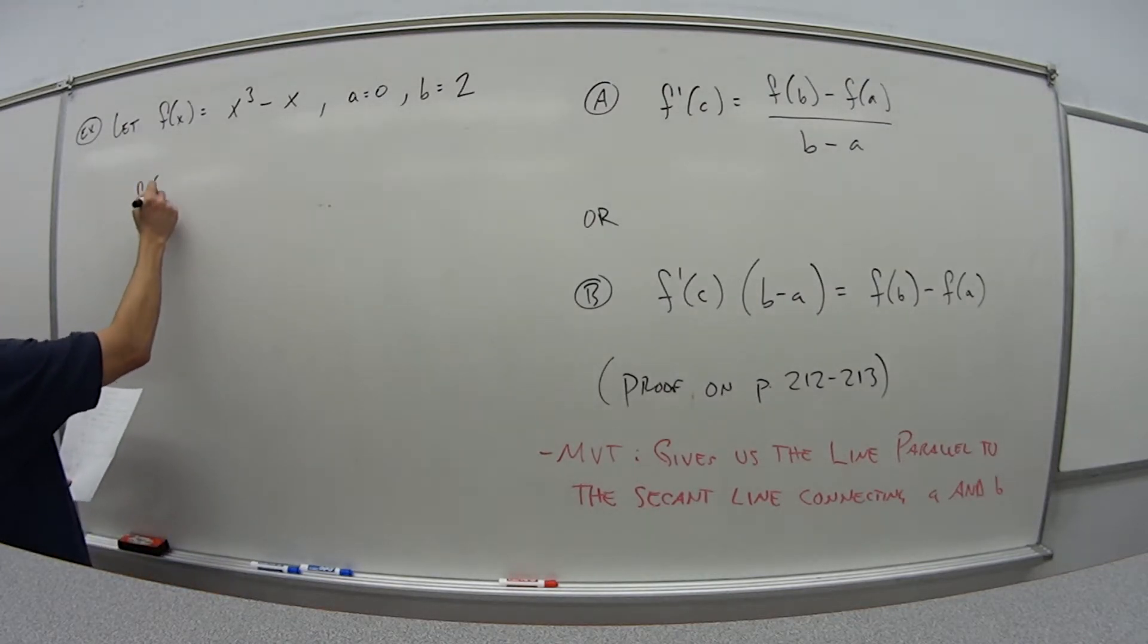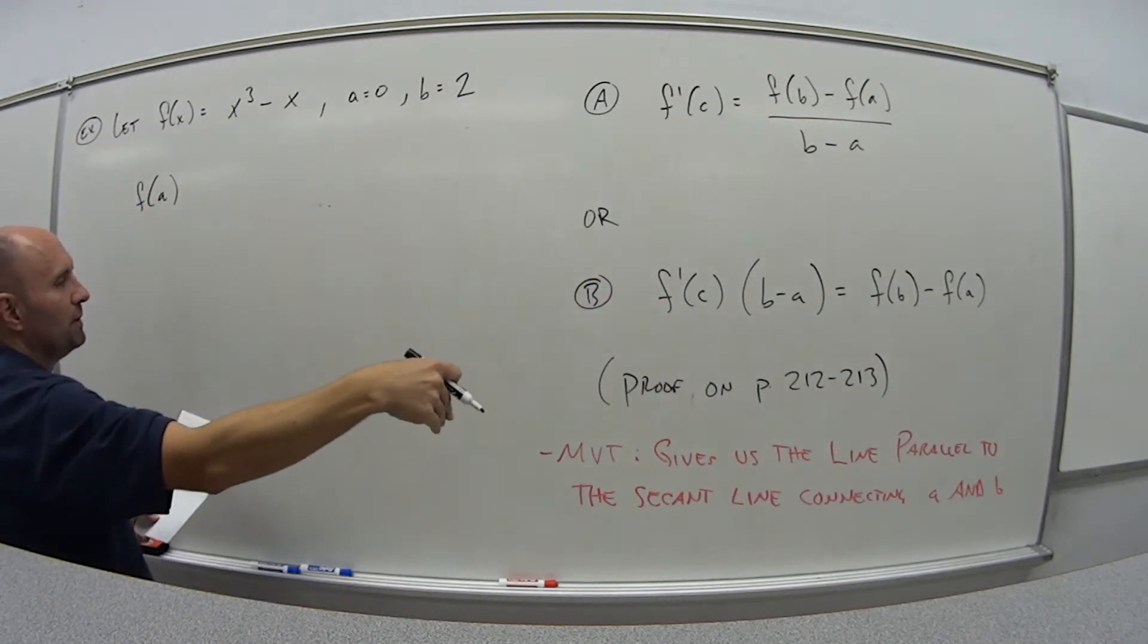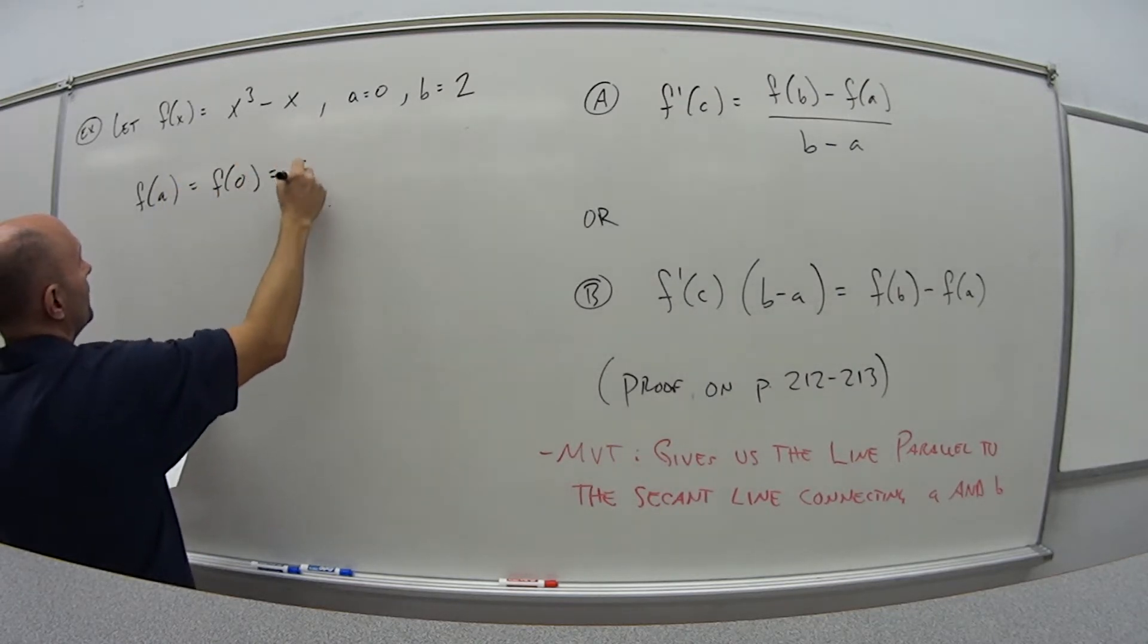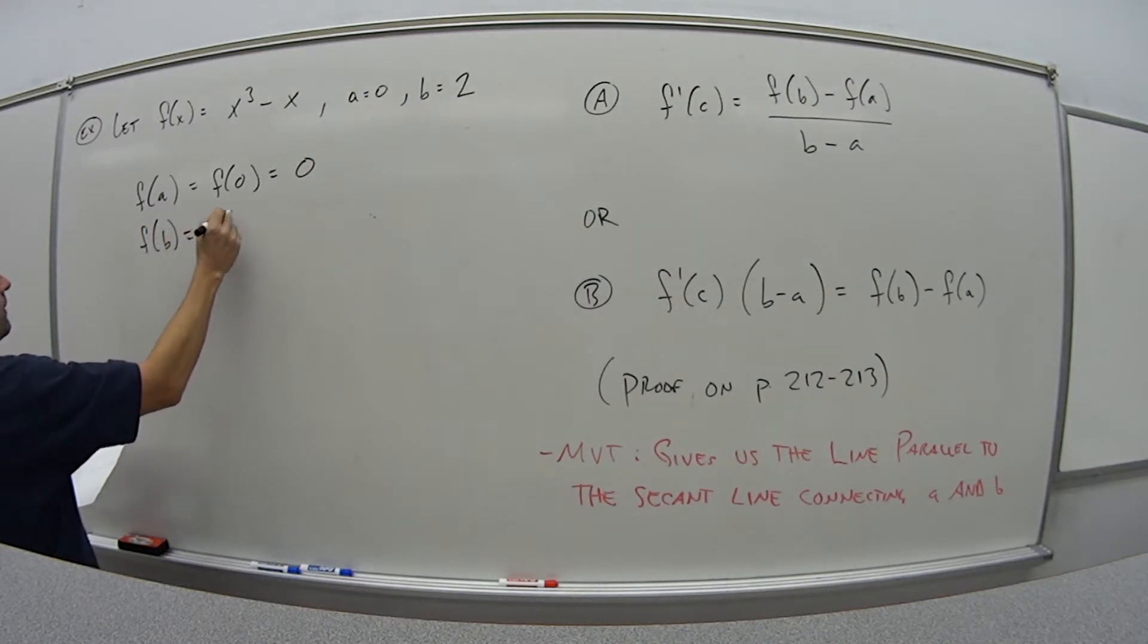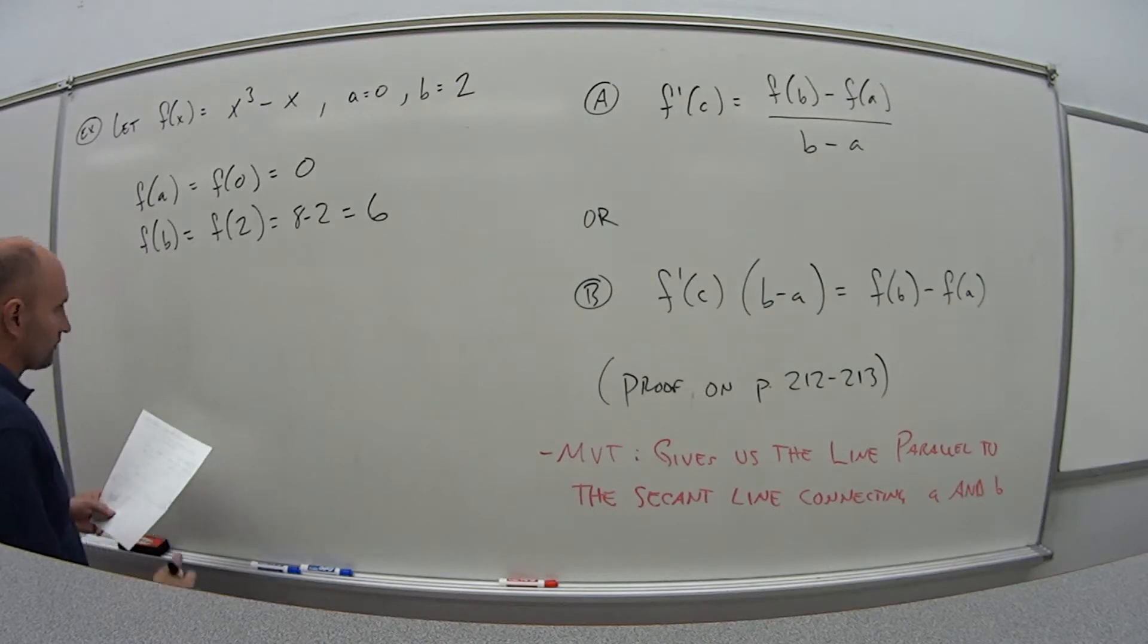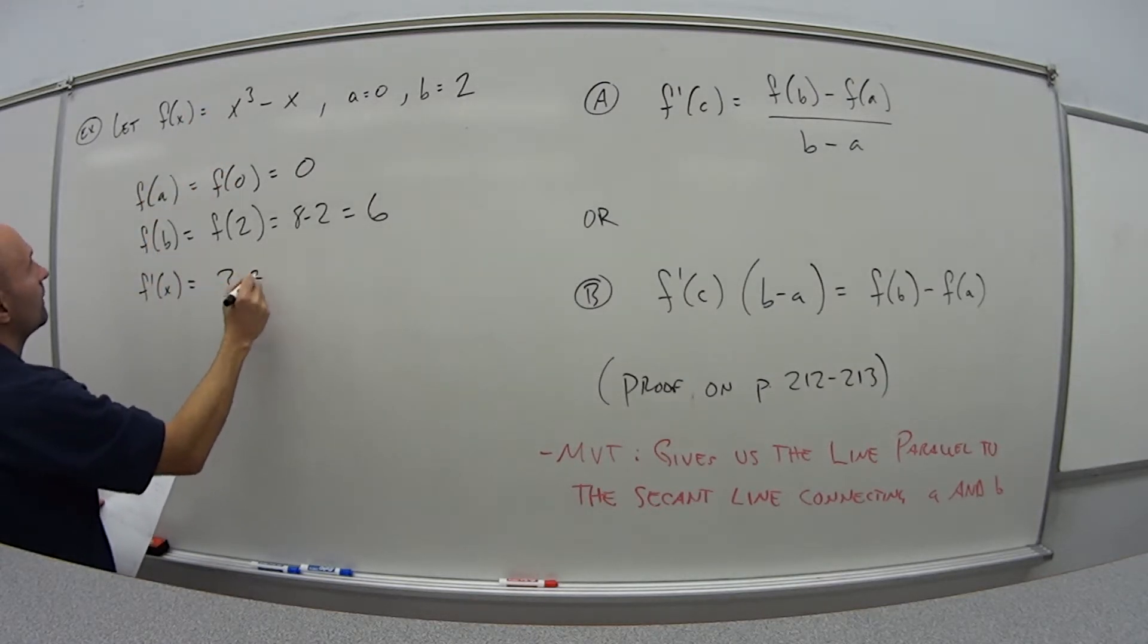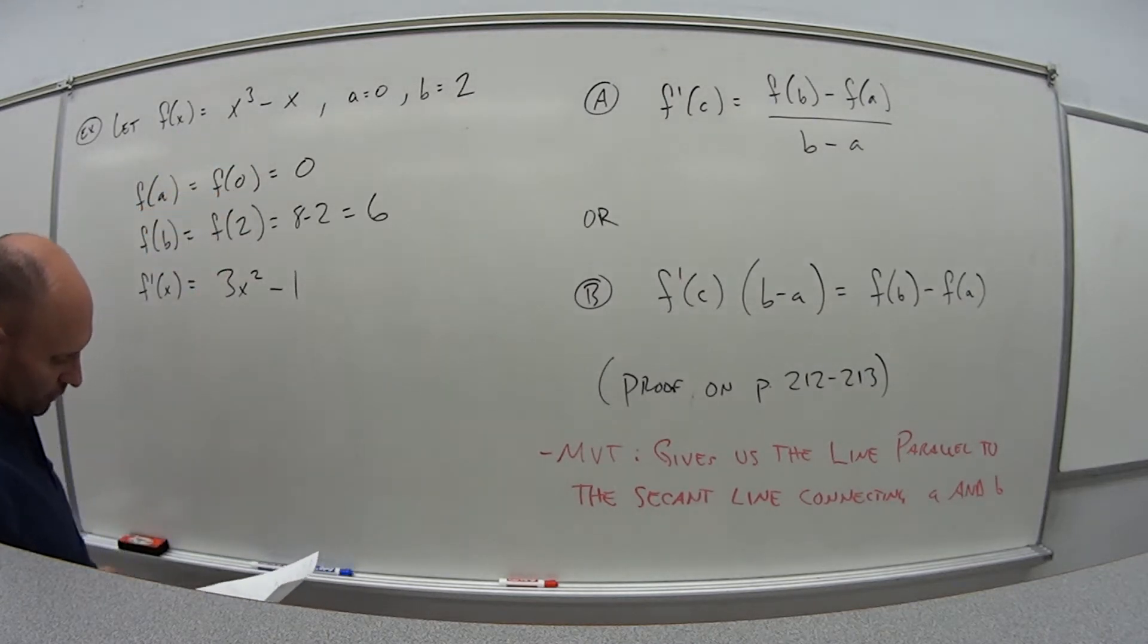We're going to be needing this formula here. So we need f(a), f(b), as well as the derivative. f(a) is just f(0). Plug in 0 here, 0 minus 0 is 0. And f(b) is f(2), which is 8 minus 2, so 6. And then the derivative, f'(x), is equal to 3x² - 1.